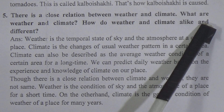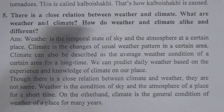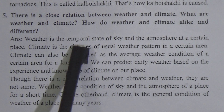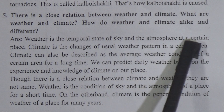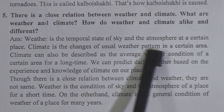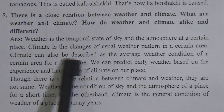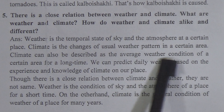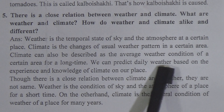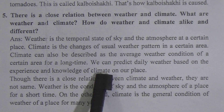Now come to the next question: There is a close relation between weather and climate. What are weather and climate? How do weather and climate alike and different? Answer: Weather is the temporal state of the sky and atmosphere at a certain place. Climate is the changes of the usual weather pattern in a certain area. Climate can also be described as the average weather condition of a certain area over a long time. We can predict daily weather based on the experience and knowledge of climate of our place.